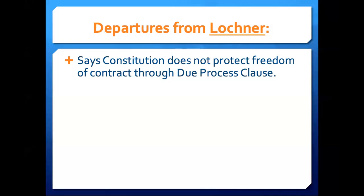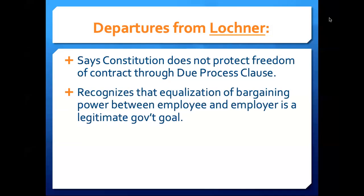We also see the court reject the view that it should be up to Elsie Parrish and the other employees to bargain for whatever type of wages or working conditions that they think is appropriate, and that any other interest the state might have would not be an appropriate interest under the state's police powers. Rather, the court recognizes that the state does have an interest in preventing the exploitation of a class of workers who are in an unequal position when it comes to bargaining power with their employer. The Supreme Court now in 1937 recognizes that trying to equalize this bargaining power between employer and employees is indeed a legitimate goal of government.